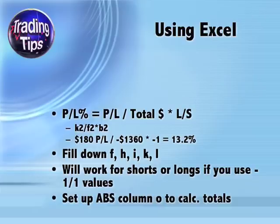Once you've entered these formulas in cells F2, H2, I2, K2, and L2, you can copy them to other rows or fill them down. Then for every transaction you make, all you have to enter are your entry, stop, and exit prices, the number of shares, and whether the position is long or short — Excel will do all the remaining work for you. You can also set up an absolute value column for Total Dollars in column O to calculate totals.